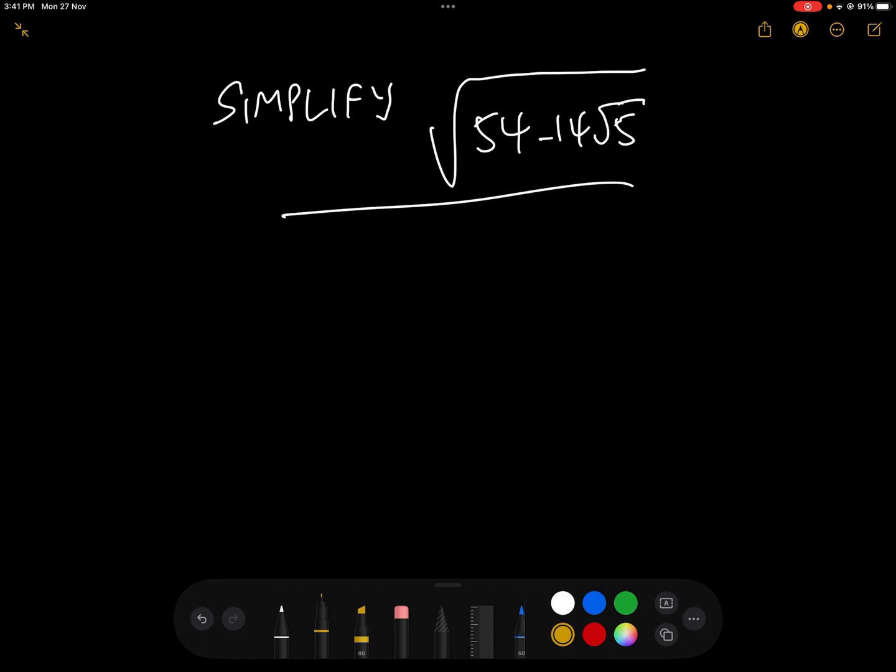Now, just in general, whenever you have anything which is the square root of something plus the square root of something else, like this one, the idea is that you want to get this something and something else into the form a plus b squared and then when you take the square root of that, the answer will be a plus b. So the challenge is getting 54 minus 14 root 5 into the form a plus b squared.